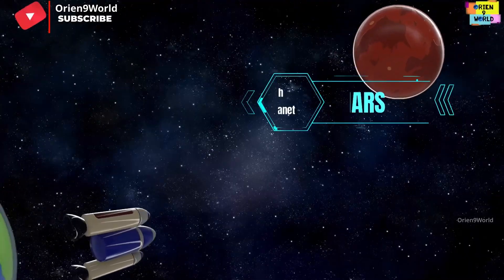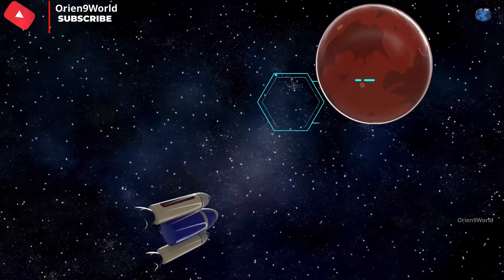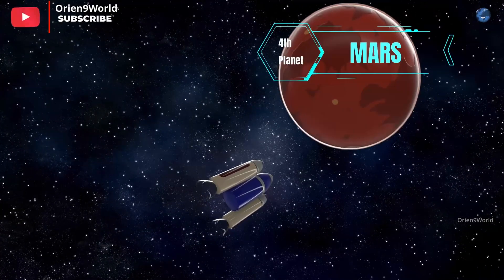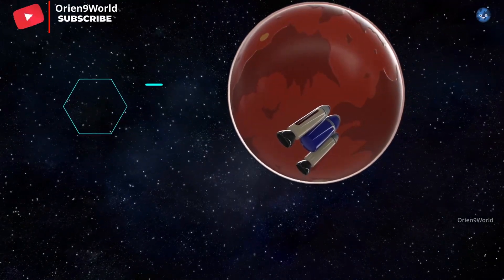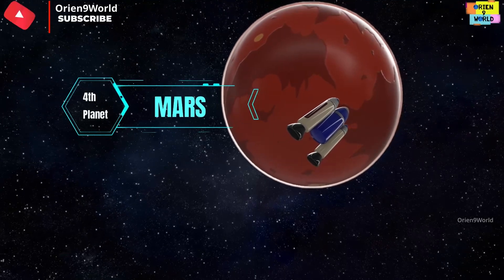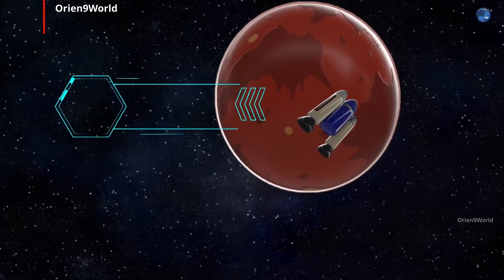My name is Mars, I am red in color, I'm the fourth planet from the sun. I have the highest mountain in our solar system, a volcano named Olympus Mons.